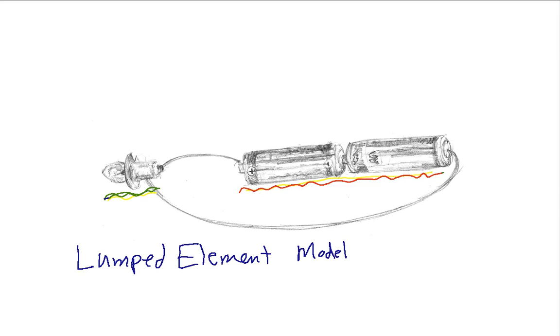So a lumped element model basically takes all of the components and considers each component as a single entity. So the light bulb would be one entity here and the batteries would be a second entity here. And the wires that connect the light bulb with the batteries, we don't really think about. They end up being what we call perfect conductors. We'll talk about what that implies in later videos.